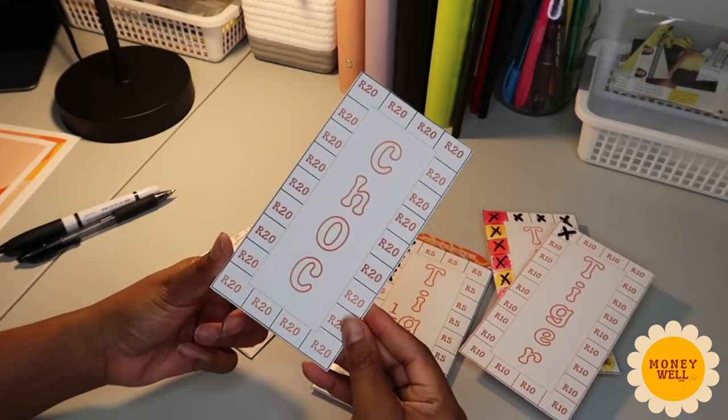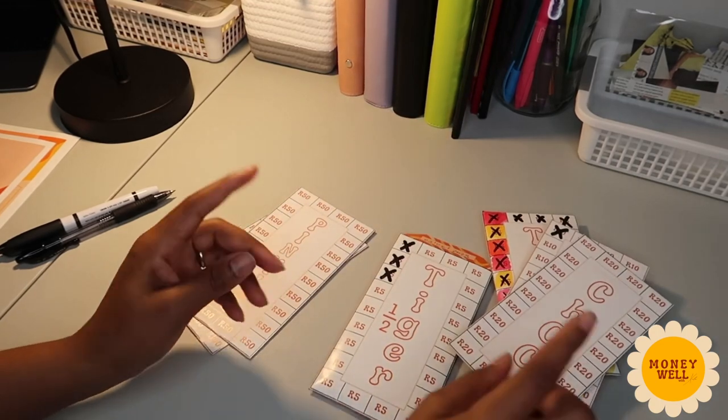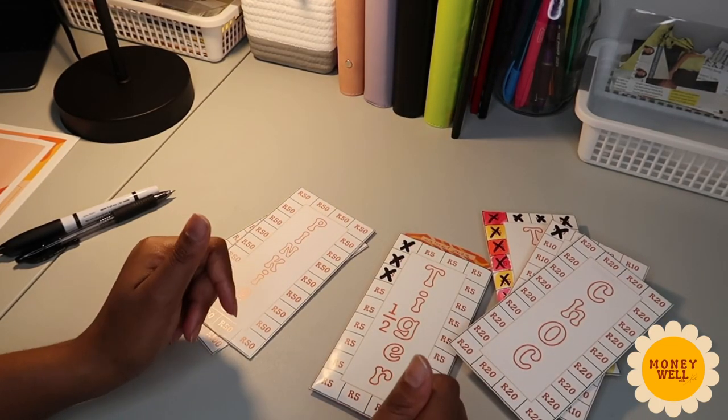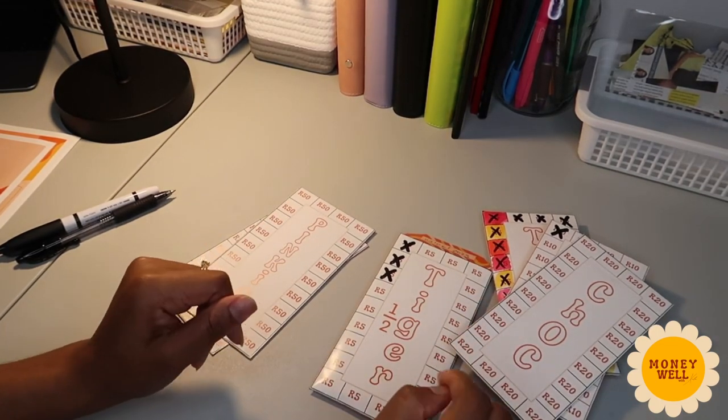And when I'm done I will have 440. I will keep the 400 rand, put it aside, take the 40 rand, add 10 rand to it and I will begin with the pinkies envelope because it's 50 rands, right?